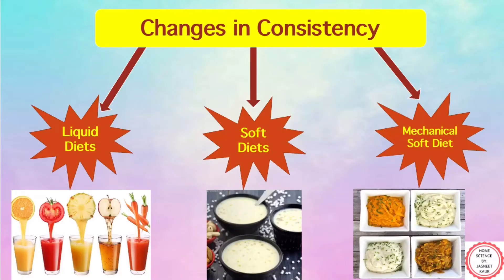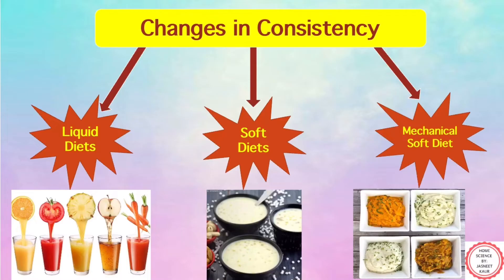The next term is change in consistency. For someone who is ill or suffering from a disease, it is advisable to give that person liquid, soft, or regular diet depending upon their condition. The first type is liquid diet, which is mainly of fluid consistency at room temperature. The advantage of this diet is that nutrients are easily absorbed and digested if the gastrointestinal tract is functioning normally. Such a diet is advised for persons unable to chew or swallow normally — for example, coconut water, fruit juice, soup, buttermilk, and milk. It is generally prescribed just after surgery.